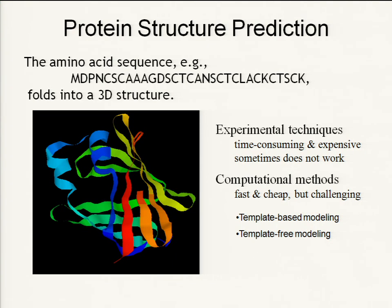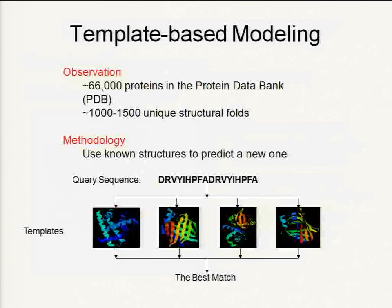Currently, there are two major approaches: free modeling and template-based modeling. The difference is whether you need a similar structure to count as a prediction. In this talk, I will focus on template-based modeling. Template-based modeling comes from the observation that we have a lot of known protein structures in databases, but only a limited number of new sequences. So we can use known structures to predict new ones.